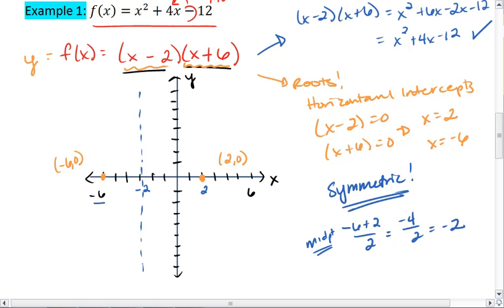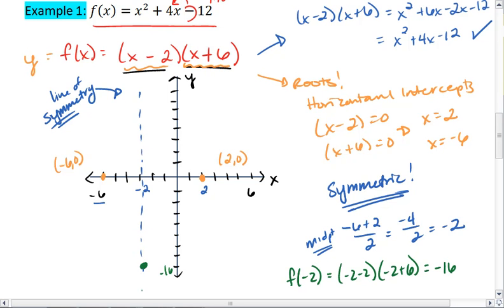So I find that that is my line of symmetry. I can then plug in negative 2 to my function. So I get negative 4 times positive 4, which is negative 16. Which means I will have an ordered pair at negative 2 comma negative 16.